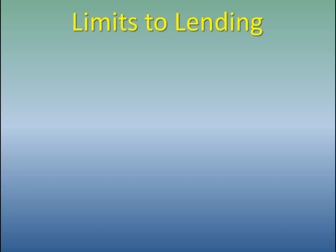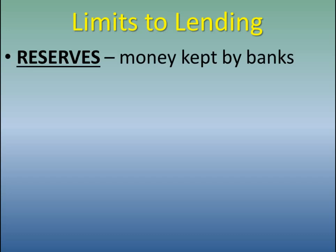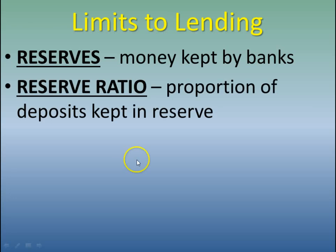There are a couple of terms we need to be familiar with. One is called reserves, which is simply the money kept by banks — the money that they reserve for people to come and be able to get when they need it. The rest of it is sent out in the form of loans. The reserve ratio is the proportion of total deposits that the bank chooses to keep in its reserves. So if for every dollar put in the bank, the bank lends out 75 cents and keeps 25 cents, then its reserve ratio would be 25 cents.